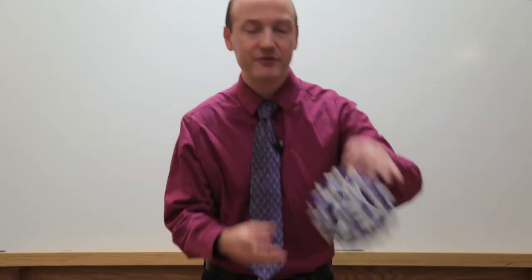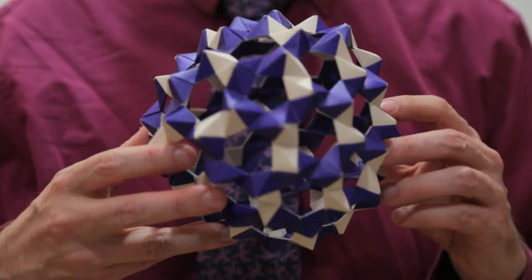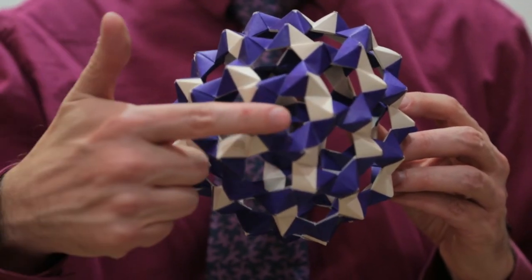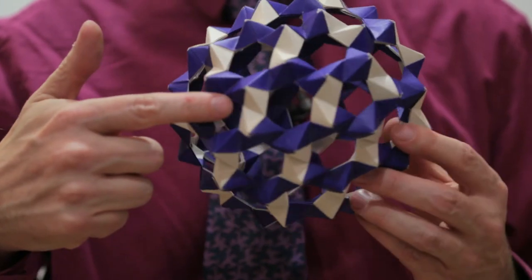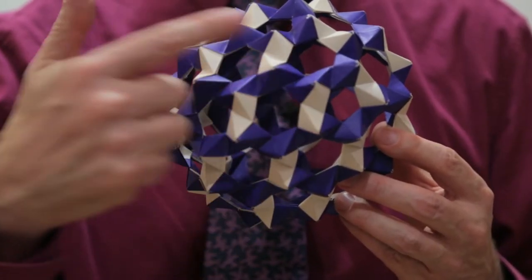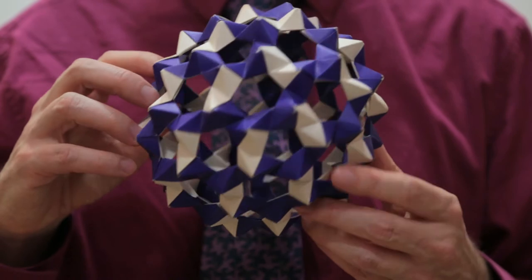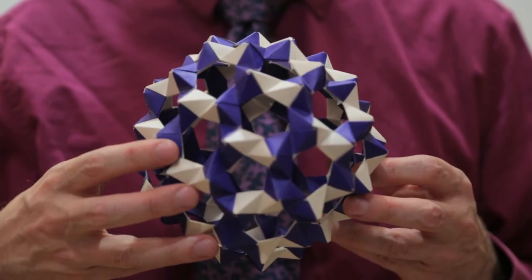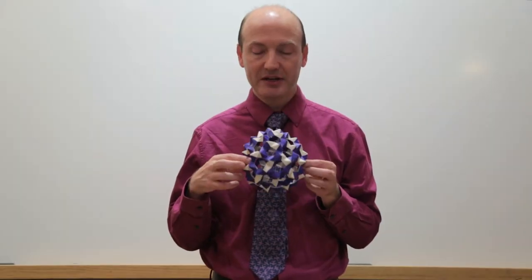But this is also made from the same unit. Except this has 120 units. Yeah. A lot more of them. So now in order to make it bigger I had to have pentagons. Like there's a pentagon right here. But also mixed in with the pentagons are hexagons. In fact there's a lot more hexagons in this than there are pentagons. This unit makes pentagons and hexagons very easily. If you try to make other things it gets a little more complicated.